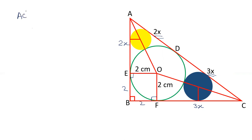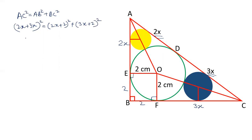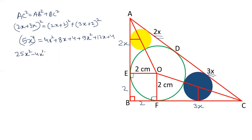Now applying Pythagoras theorem in triangle ABC: AC² = AB² + BC². AC is 2x + 3x = 5x. AB is 2x + 2, and BC is 3x + 2. So (5x)² = (2x+2)² + (3x+2)², which gives 25x² = 4x² + 8x + 4 + 9x² + 12x + 4. Rearranging: 25x² − 4x² − 9x² − 8x − 12x − 4 − 4 = 0.